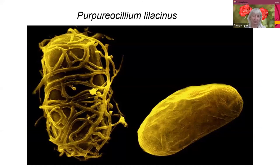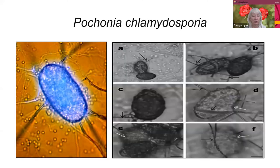We have Purpuricillium lilacinum — it used to be called Paecilomyces lilacinus — which is an egg parasite, and there are some products on the market which are quite good. Then we have Pochonia, which is not on the market here — I'm a little unsure — but it's also an egg parasite.